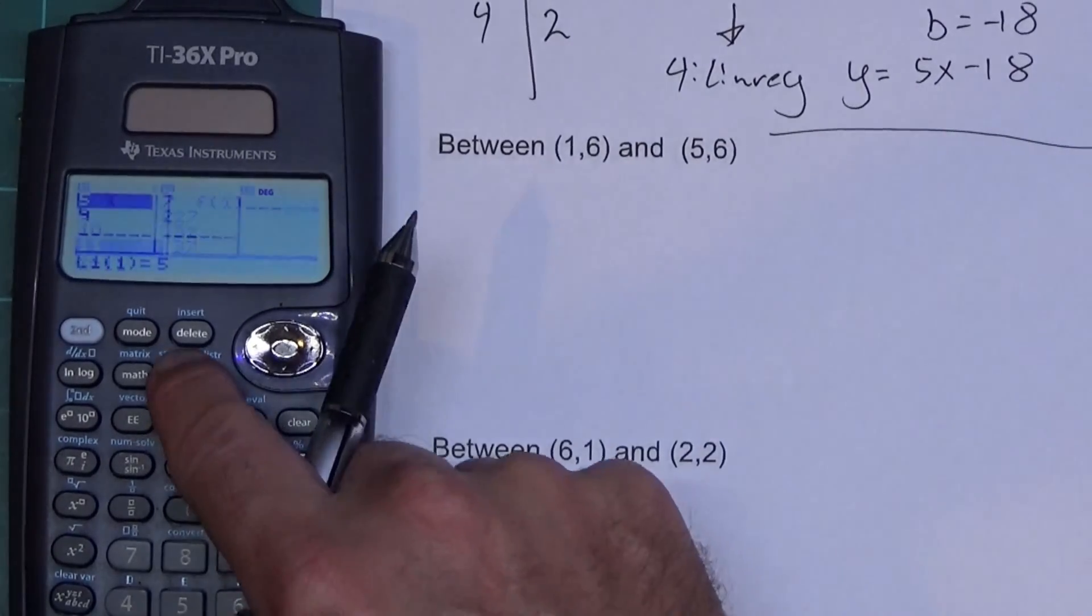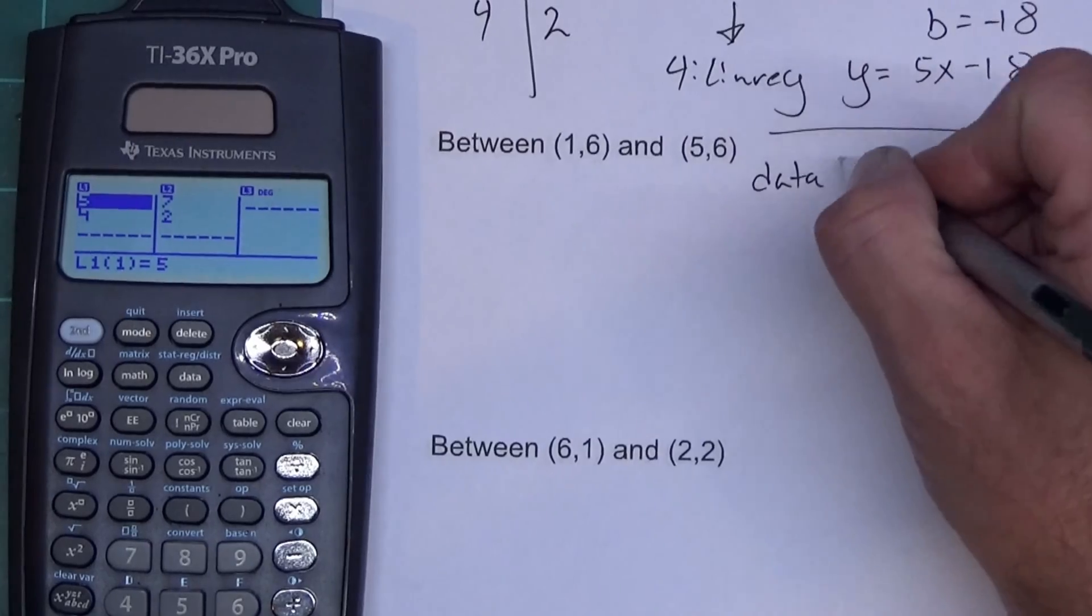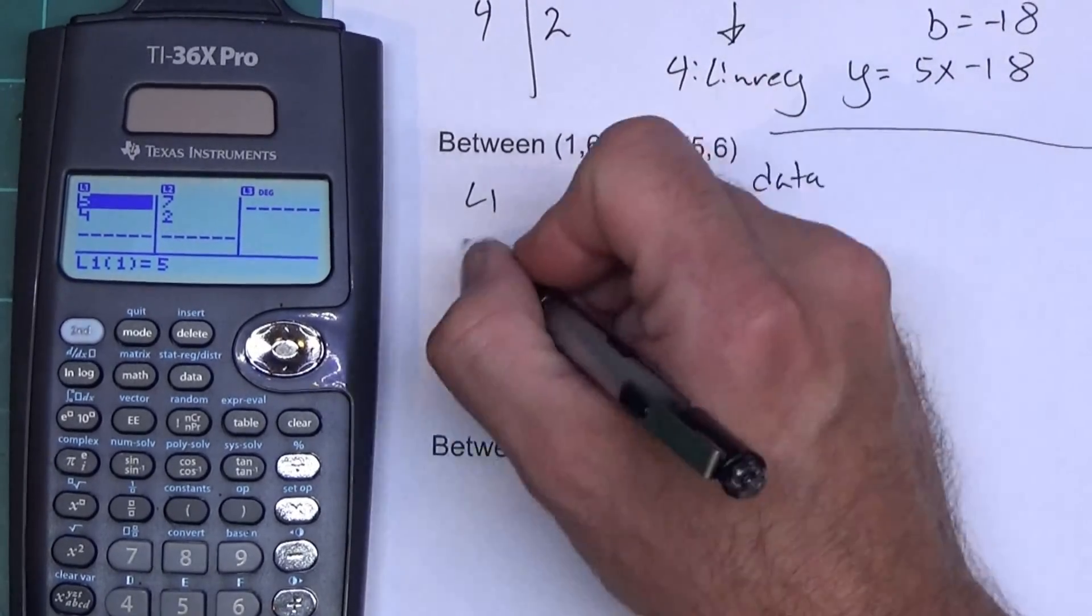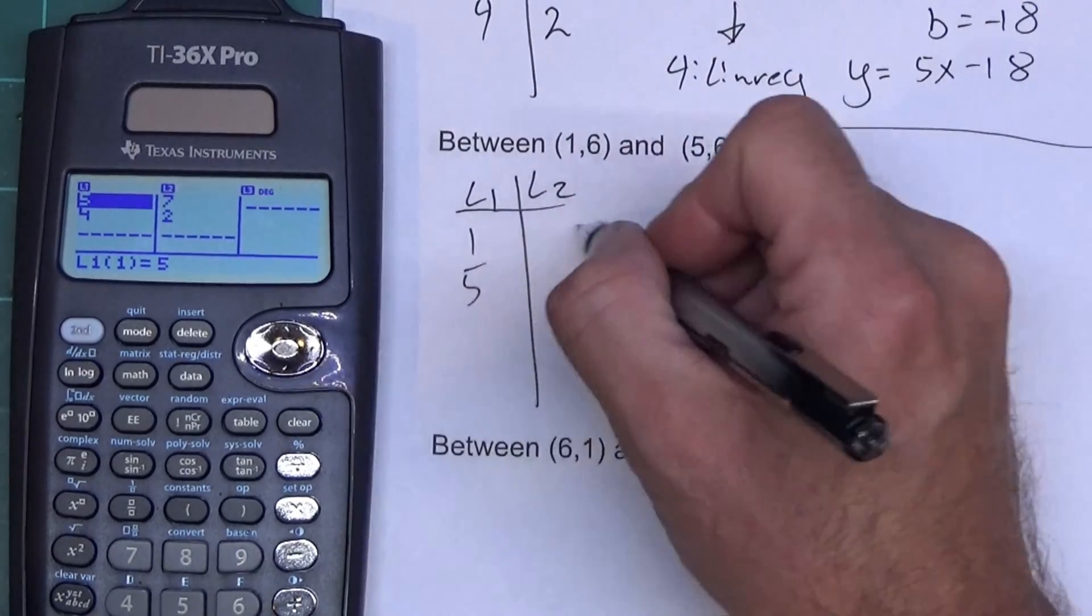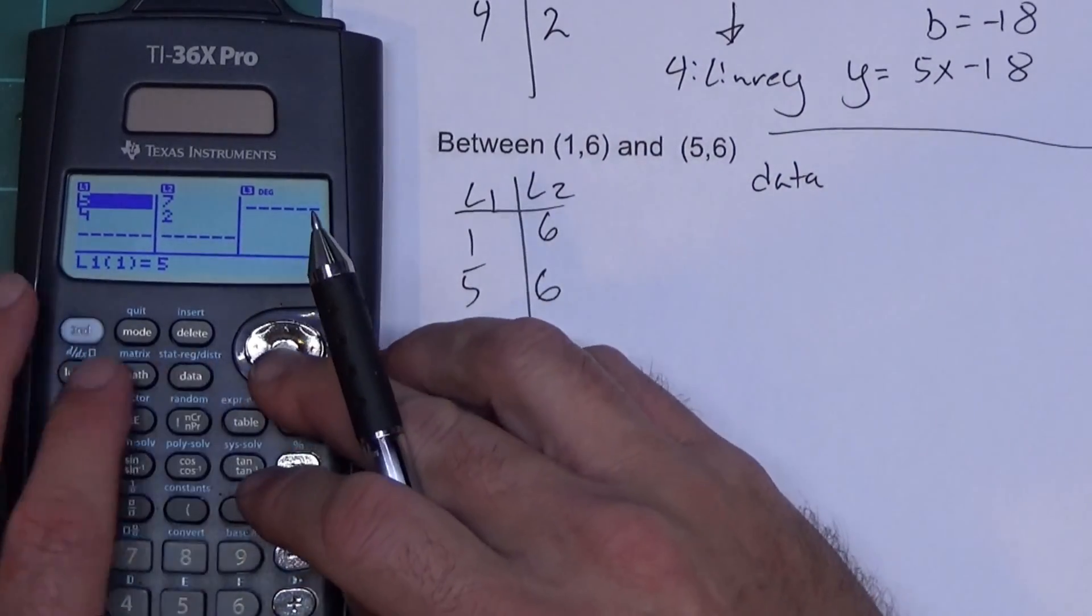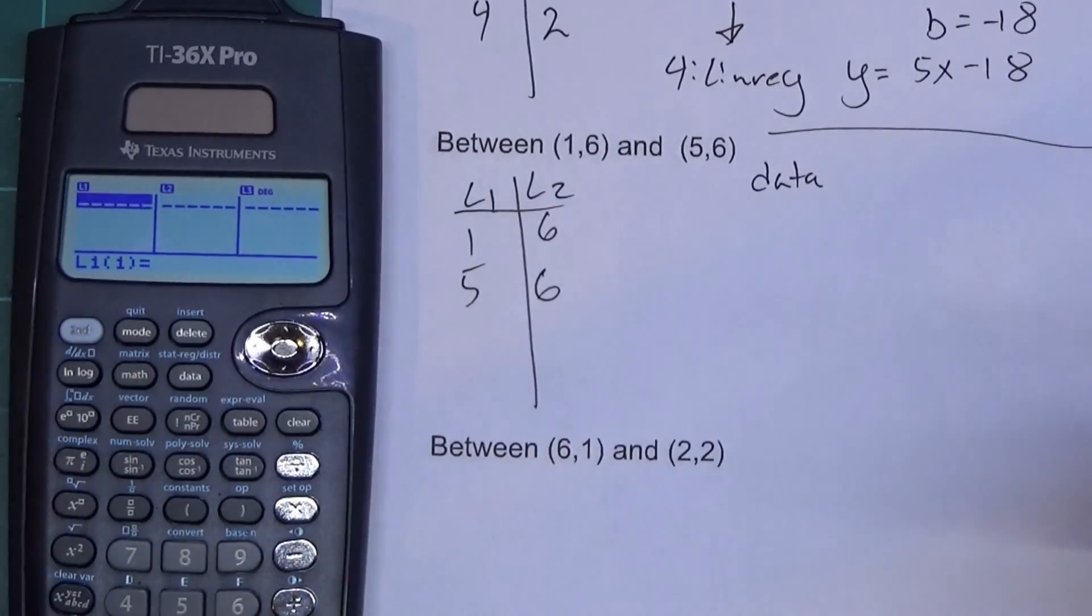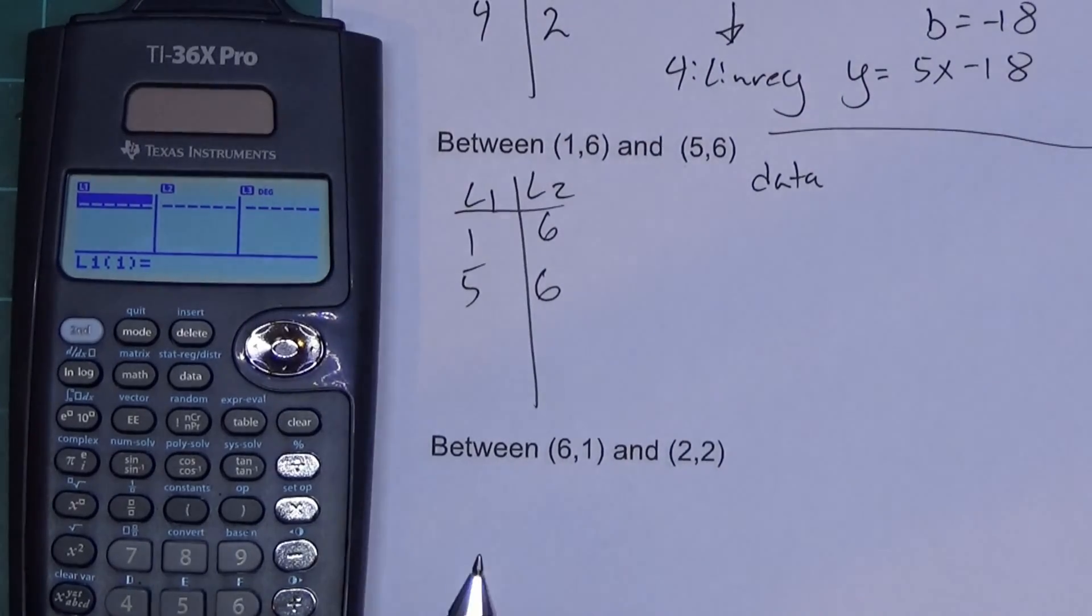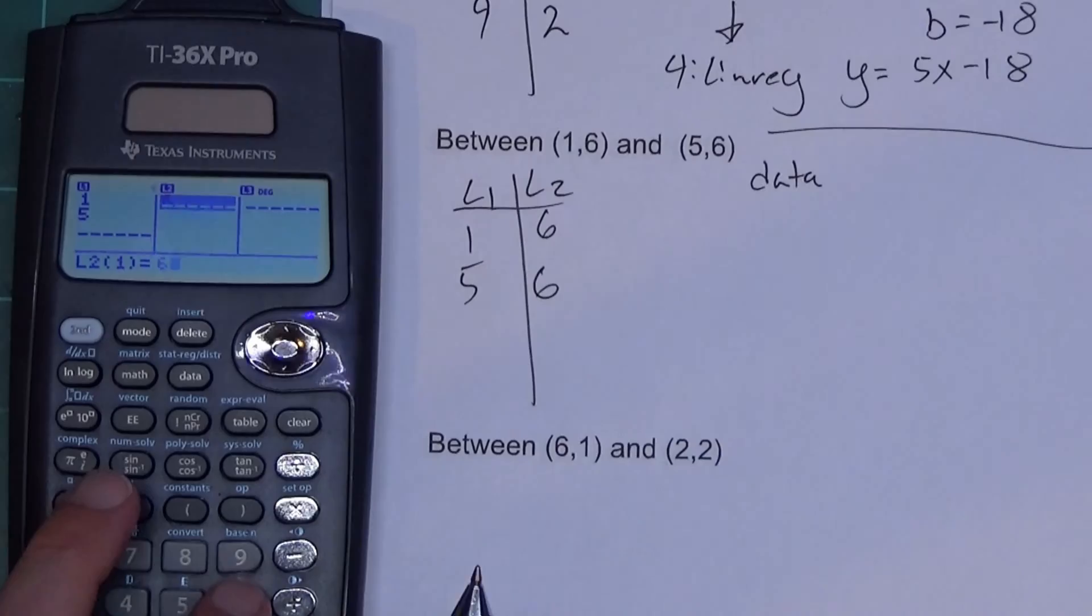So let's go ahead and do this one next. So we're going to press data. Okay. Again, we're pressing data. And in L1 we're going to put the X's, in L2 we're going to put the Y's. So L1 is going to be 1 and 5. We're going to put 6 and 6 in L2. And again, I don't know how to clear them other than press and delete. You can overwrite them. So next problem I'm going to overwrite them. I'm going to put 1 and 5. Over here I'm going to put 6 and 6.